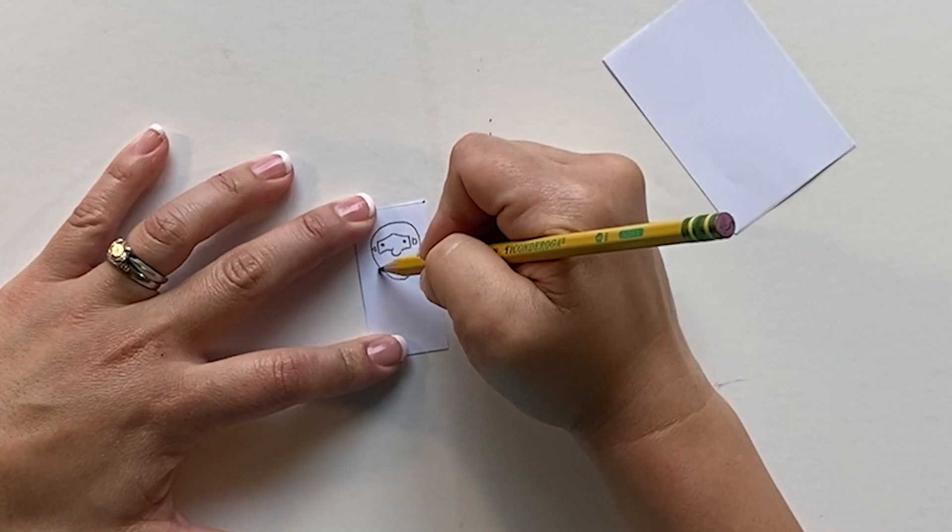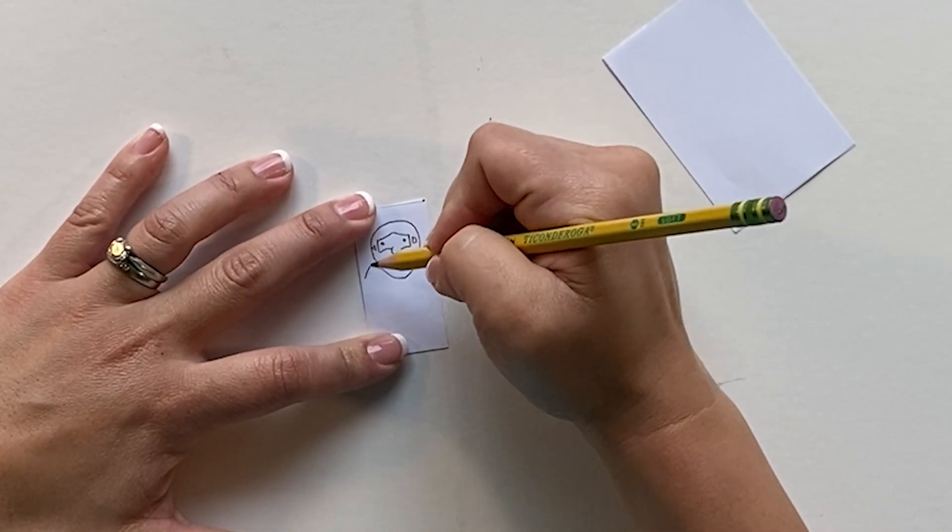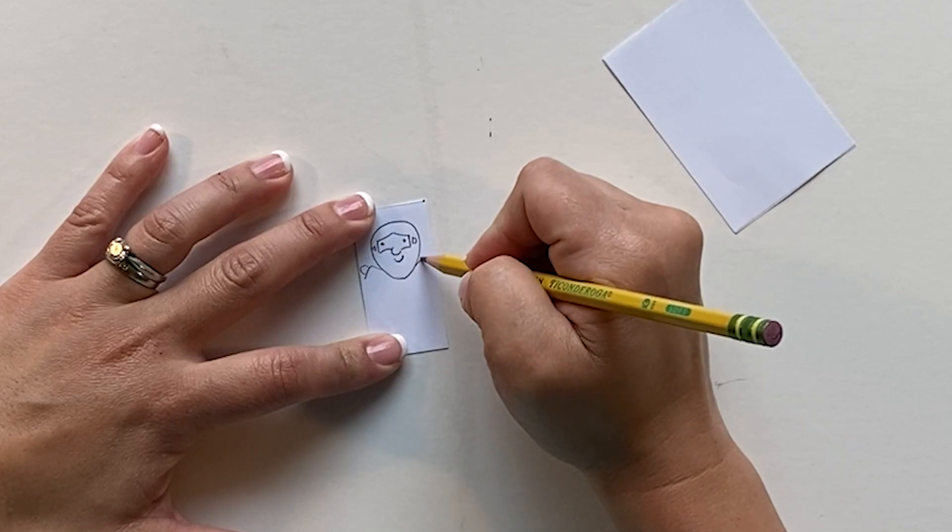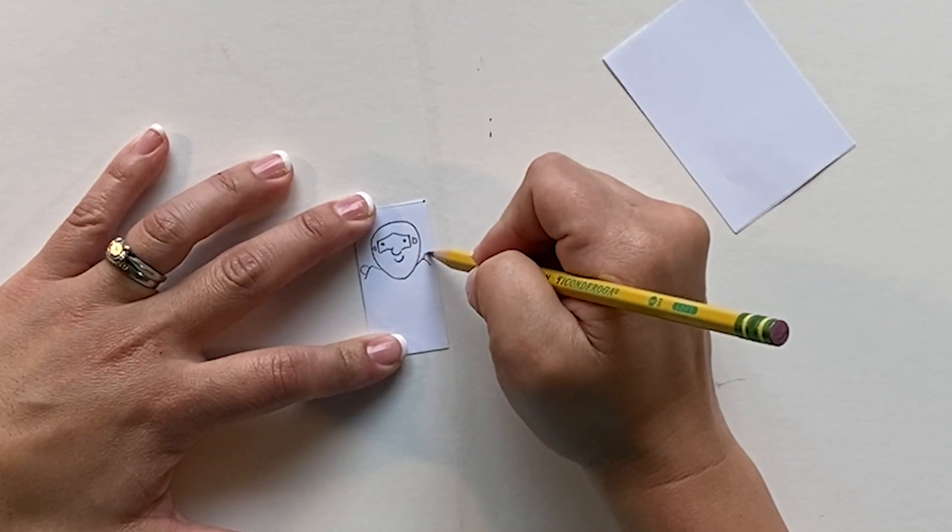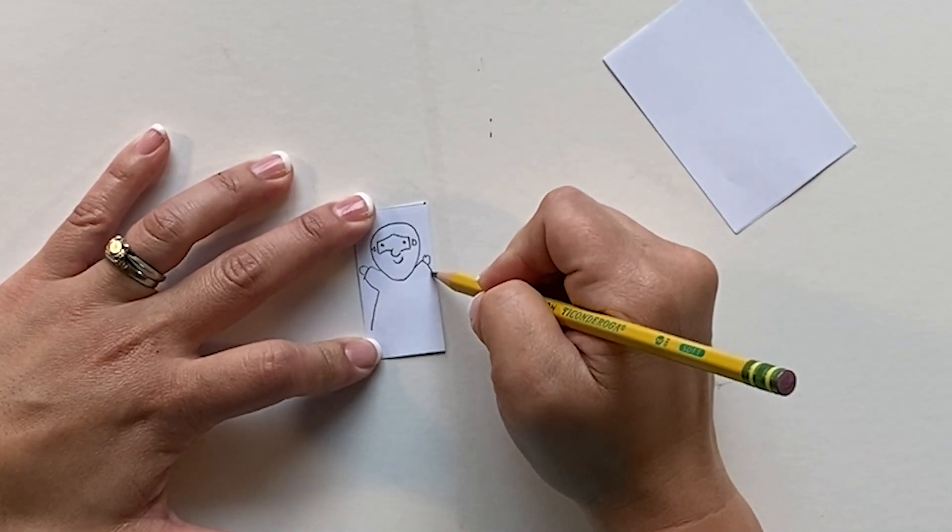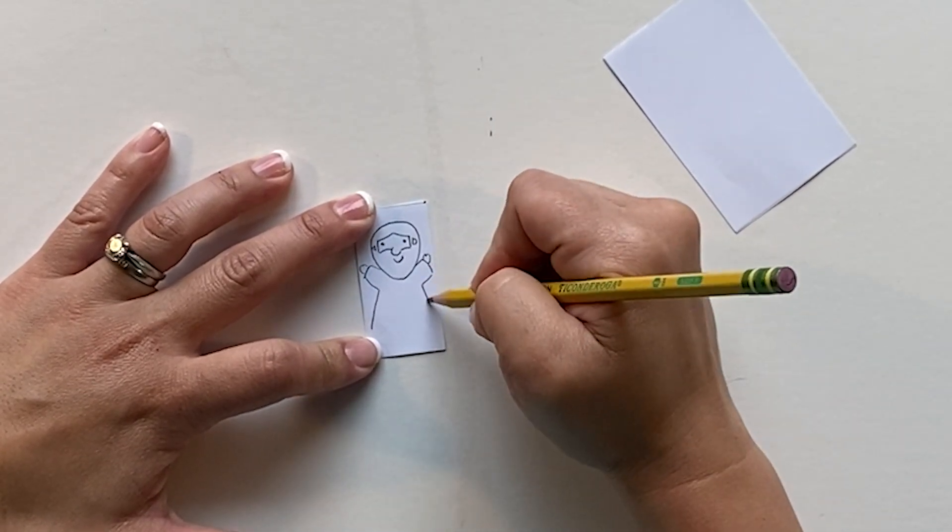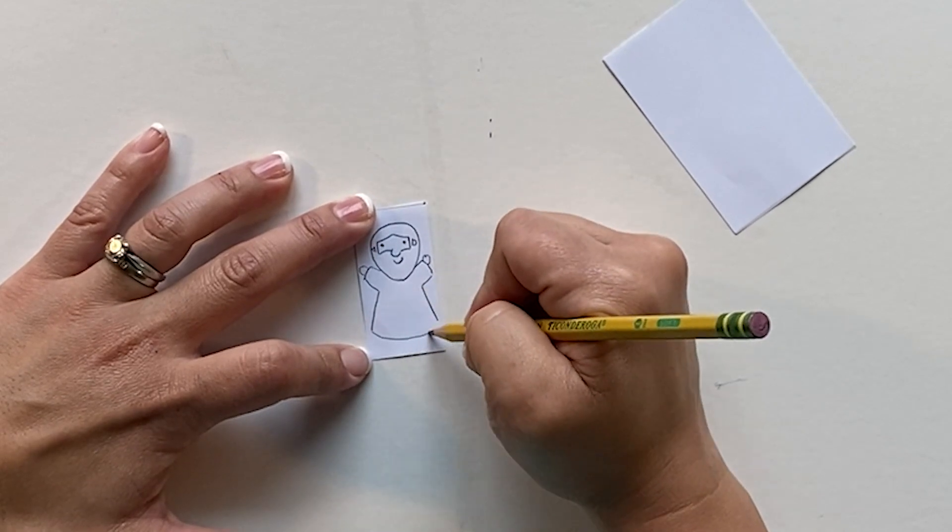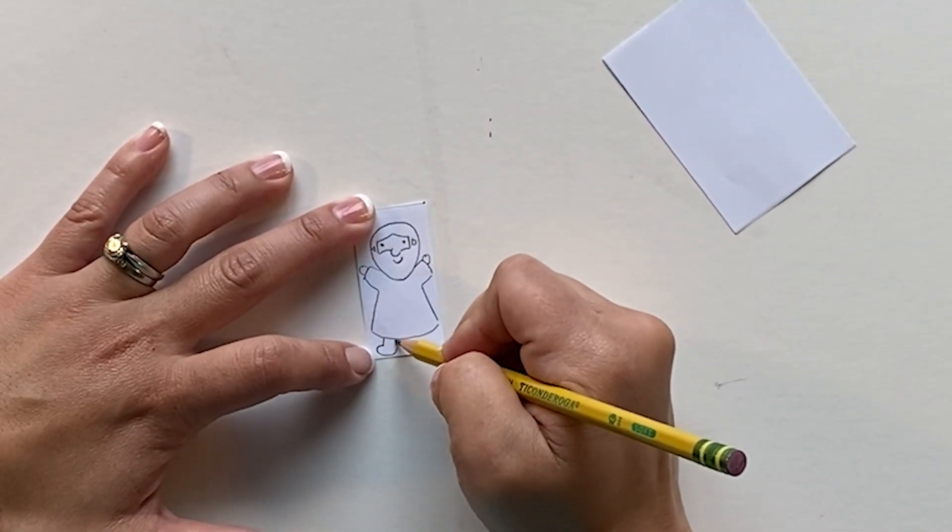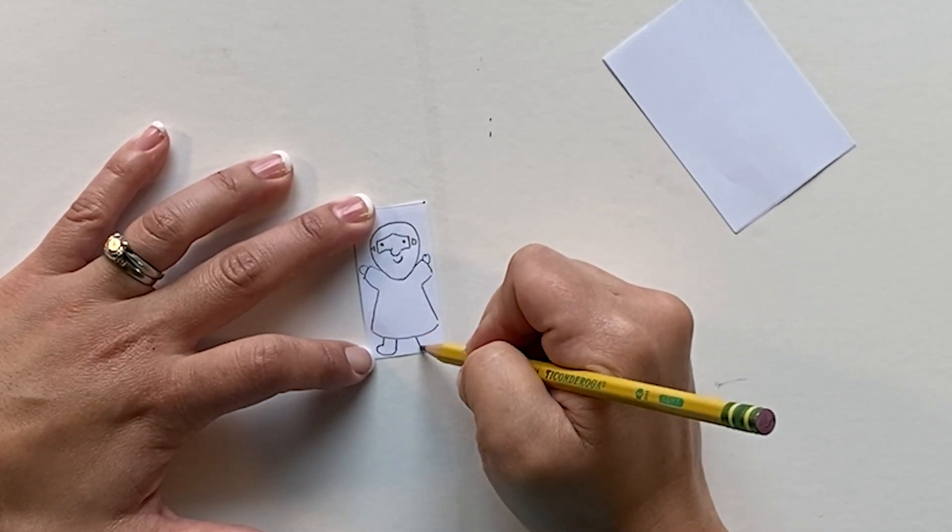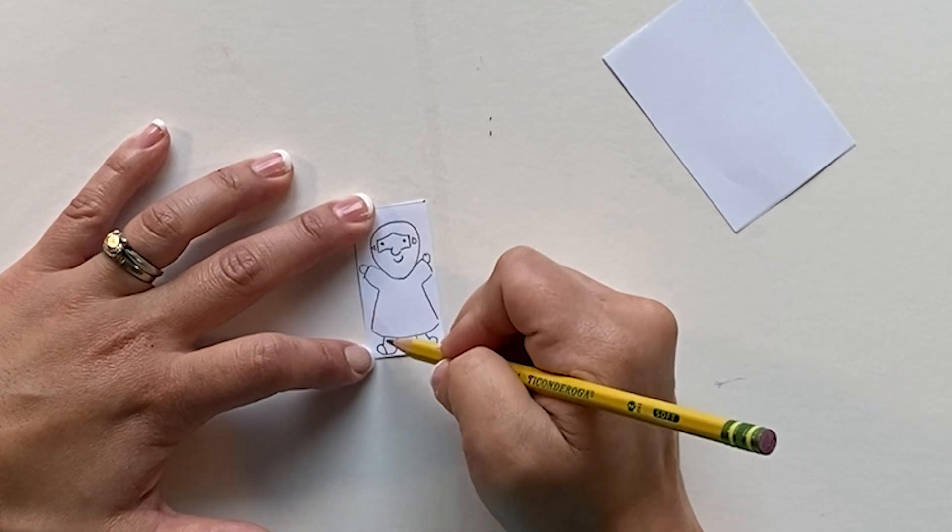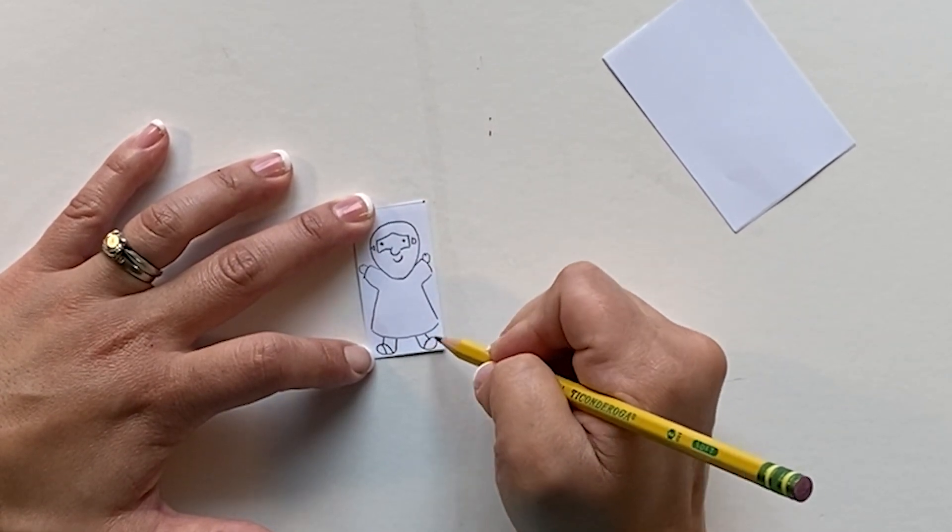Then we'll give him some arms. Draw really tiny, and give him some sandals, just putting some lines down for his feet.